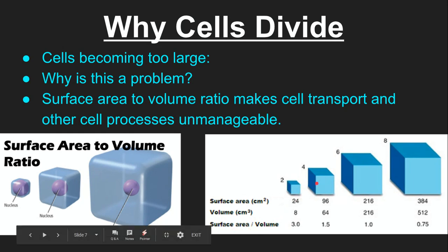Now as the cell gets bigger, you can see that both of these values go up. The thing is they don't go up at the same rate. The surface area increases, but the volume increases much faster. So the area inside of the cell is getting bigger much faster than the area outside of the cell.